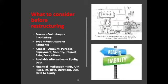So what do we consider before we restructure? Number one is the source — is it voluntary or involuntary? Number two is the type — is it a restructure or a refinance, knowing that refinancing is a subset of restructuring? Number three is the aspect — which aspect of the facility are we restructuring? Is it the amount, the purpose, the repayment, security, interest rates, fees, or which particular aspect do we want to restructure?